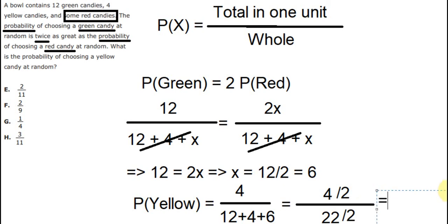And the final answer we got is about 2 over 11. And the answer for the question is about F. Oh no, no, no. That's about E.